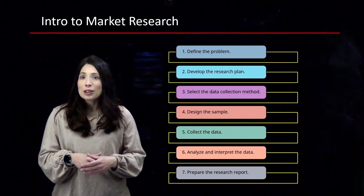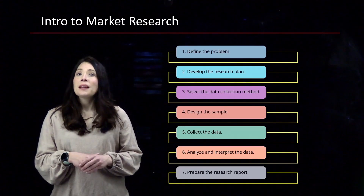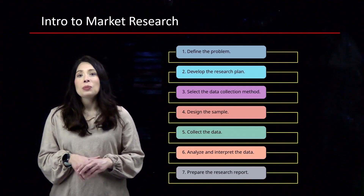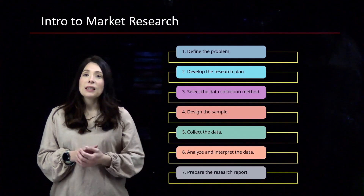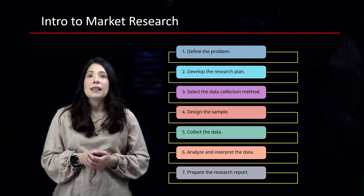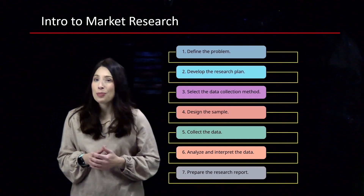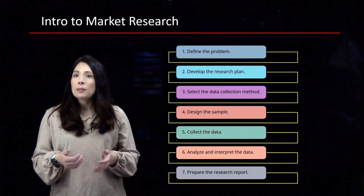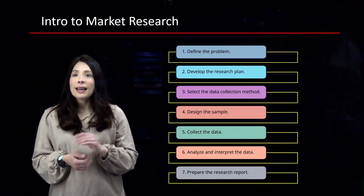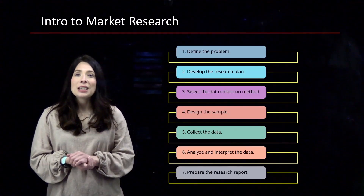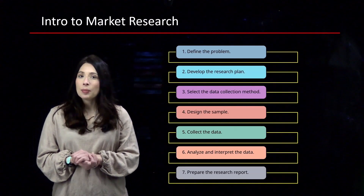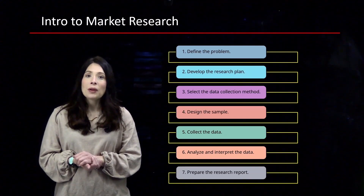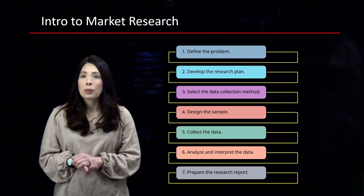Market Research follows a market research plan, and in that market research plan we follow the seven-step process outlined in the textbook, where you define the problem to be solved, develop the research plan, select your data collection method, design the sample, collect the data, analyze and interpret, and prepare the report.